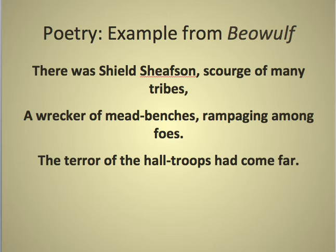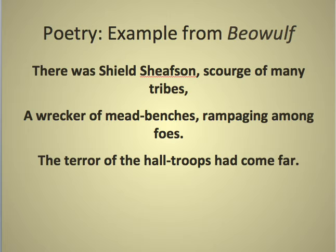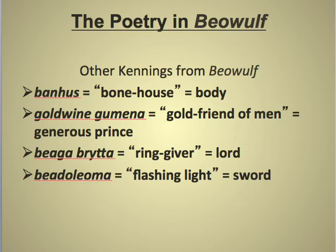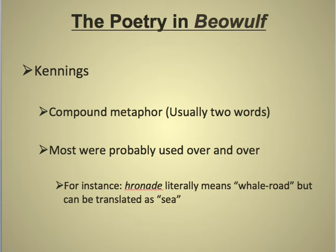The reason I showed you the Old English version is because most of the alliterative verse is lost in our translation. Here's what that first line actually means in translation — it's about the head of a great tribe and how powerful this person is. Another poetic term you should know is kennings. Kennings are compound metaphors, usually two words, and most were probably used over and over. In the Old English version it would be 'banas,' but in our translated version we'll see 'bonehouse,' which translates to 'body' — so it's a compound metaphor.